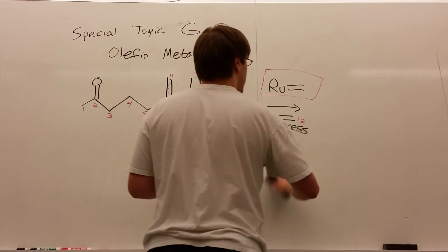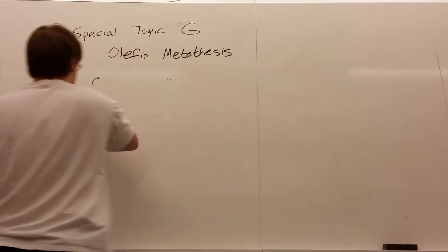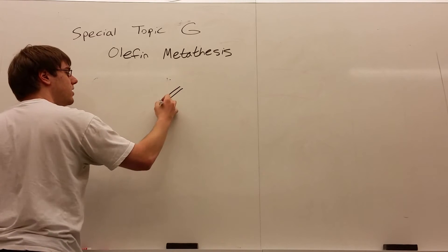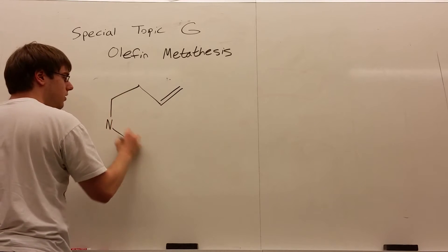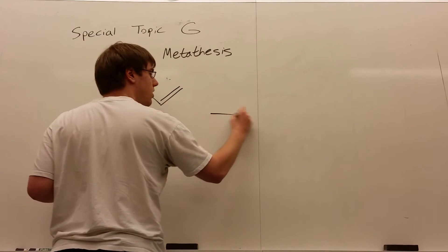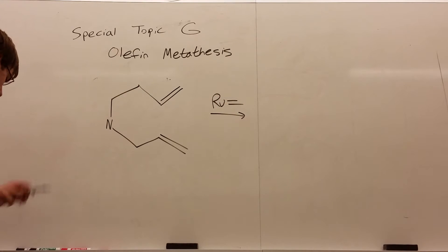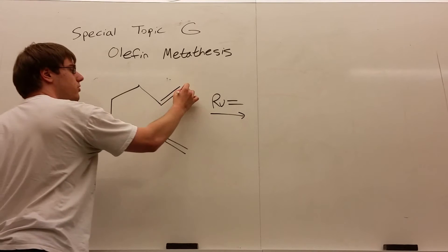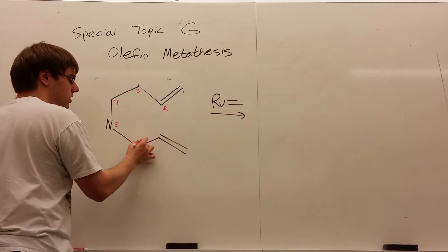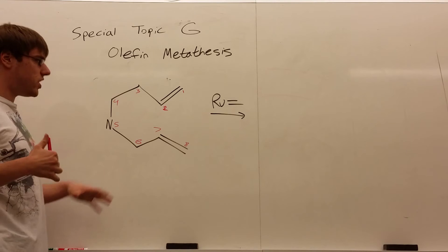Now the other example you'll see in olefin metathesis is where you start with two double bonds in the actual starting reactant. So for example, let's say I have a double bond like this, let's put a nitrogen here for fun, and a double bond like that. And then you see over the arrow, Ru double bond. Now, again, start by just numbering your carbons. One, two, three, four, well I'll number the nitrogen for fun, six, seven, and eight.